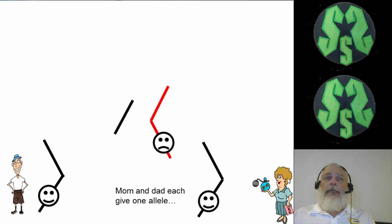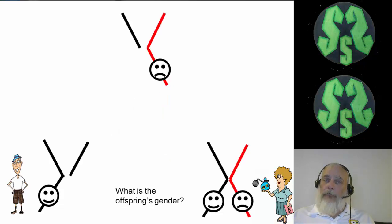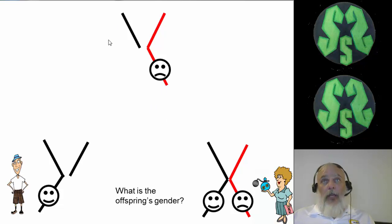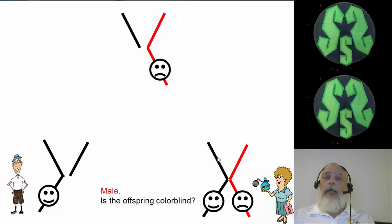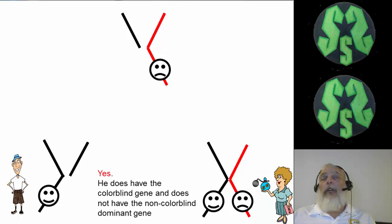But what if dad gives the Y chromosome and mom gives the other X chromosome — the one that carries the colorblindness trait? This is also going to be a boy. Is this boy going to be colorblind? It has one colorblind gene and that's all it has — one recessive colorblind gene with no dominant normal gene. So yes, this boy is going to be colorblind.